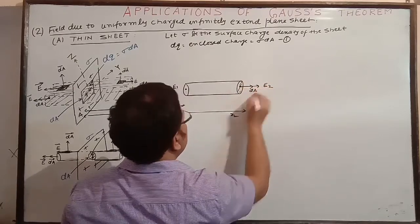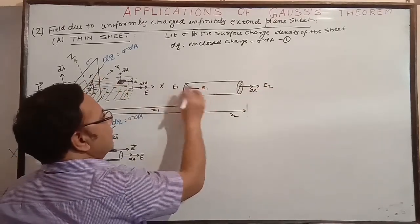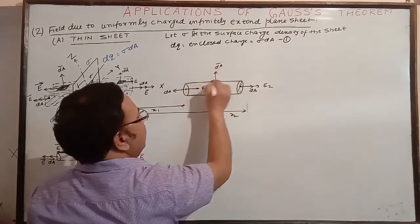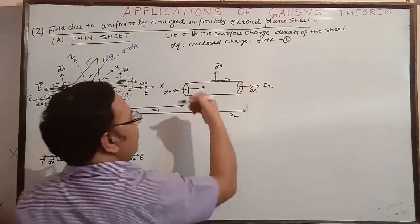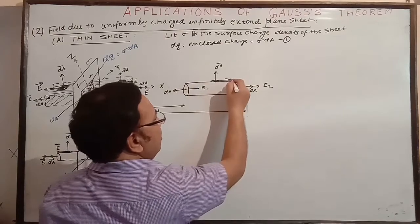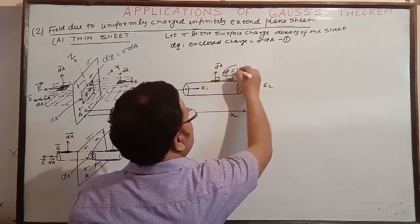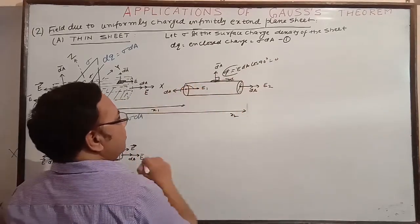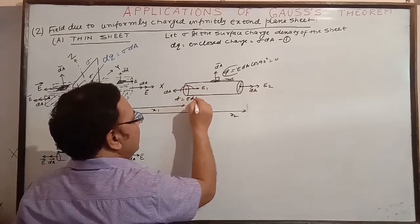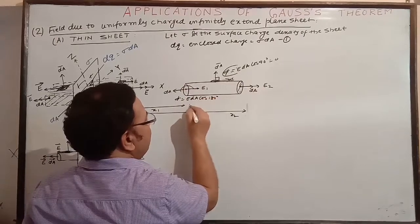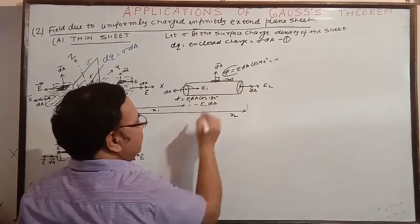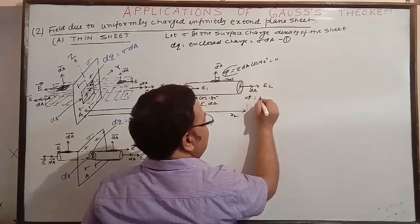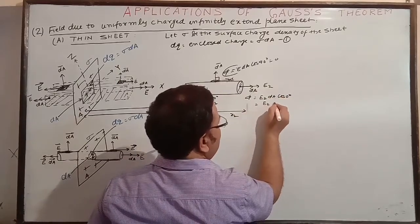The electric field at one end is in the rightward direction, and the area vector for that surface is also in the same direction, giving E2·dA. For the curved surface, the outward normal is always perpendicular to the electric field, so the flux contribution is E·dA·cos 90° = zero. For the left end cap, the flux is E·dA·cos 180° = -E1·dA. For the right end cap, E2 and dA are in the same direction, giving E2·dA·cos 0° = E2·dA.